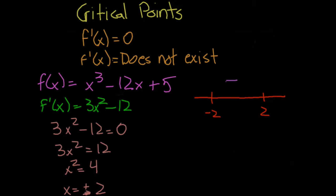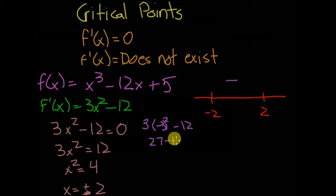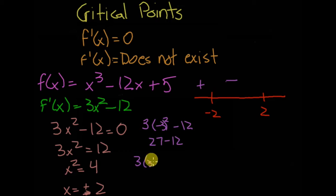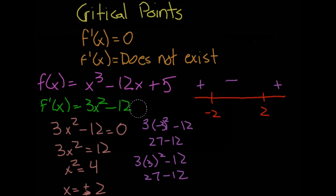Now take a number less than negative two — let's take negative three: 3(-3)² minus 12 equals 27 minus 12, which is positive. And for a number greater than two, let's take x = 3: 3(3)² minus 12 equals 27 minus 12, also positive.